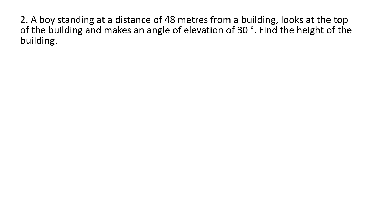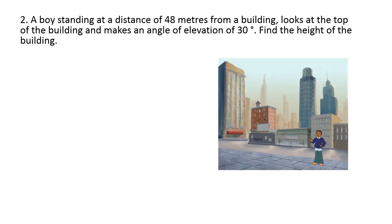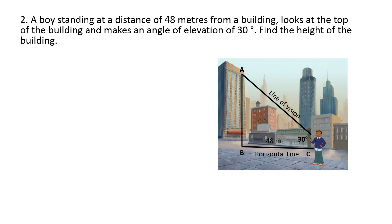Here is another question: A boy standing at a distance of 48 metres from a building looks at the top of the building and makes an angle of elevation of 30 degrees. Find the height of the building. We make a figure as per the given question. The line from the boy to the top of the building is the line of vision, and the horizontal line BC = 48 metres. The angle formed is 30 degrees, and AB represents the height of the building.